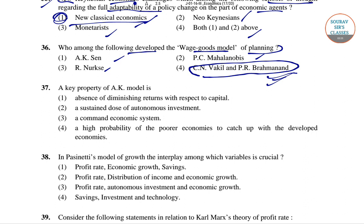This was given as a viable alternative to the heavy industry strategy given by Professor Mahalanobis. The Second Five Year Plan was based on a two-sector model and a four-sector model. For question number 36 the right answer is CN Vakil and PR Brahmananda, who developed the wage goods model.